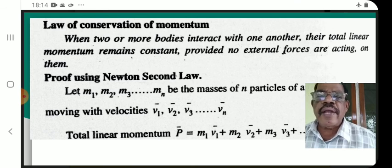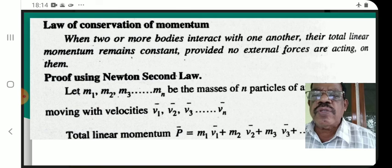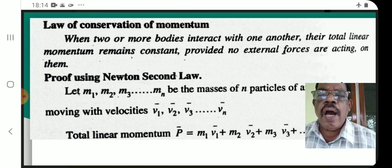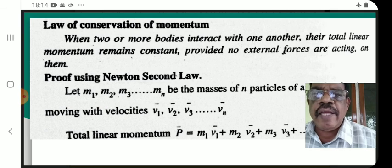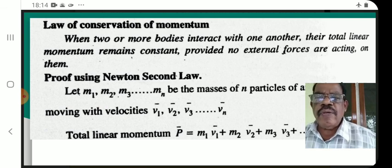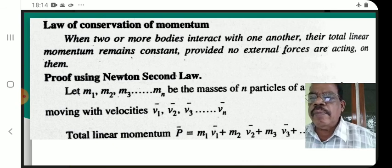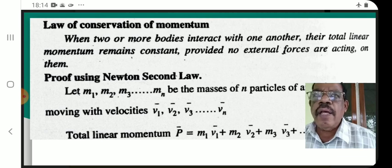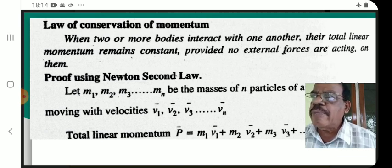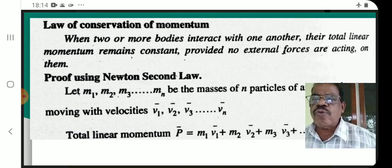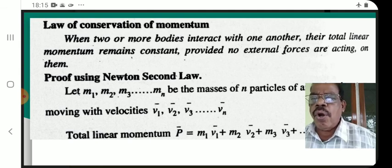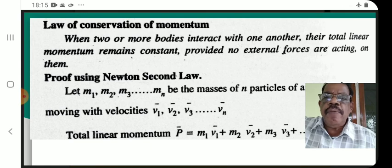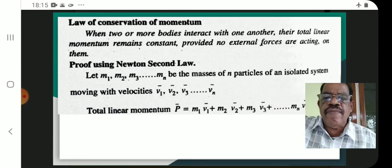Law of conservation of linear momentum: When two or more bodies interact with each other, their total linear momentum remains constant, provided no external forces are acting on them. The total momentum of a system is conserved when there is no external force acting on it.